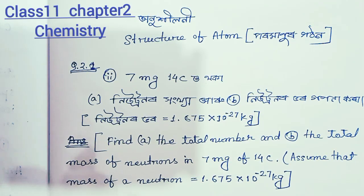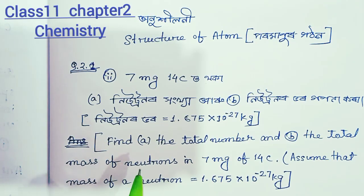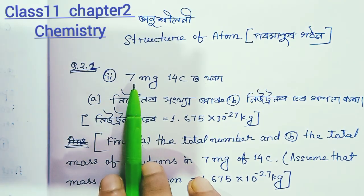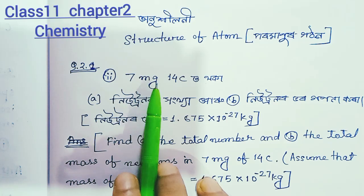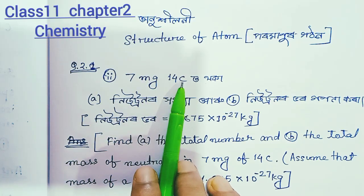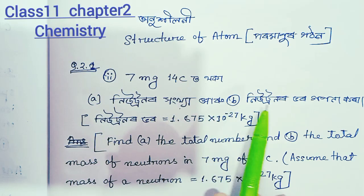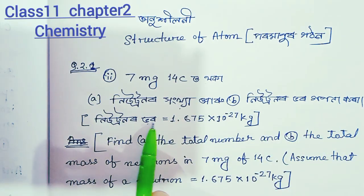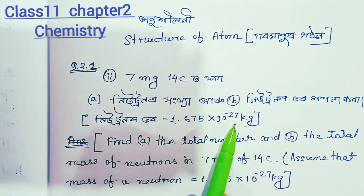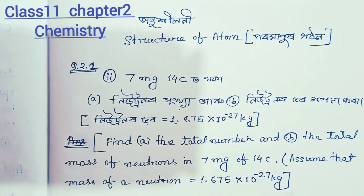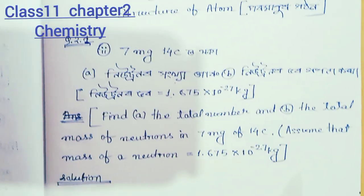This would be 8.0 mg. This is not a total of neutrons. That is not a total of neutrons.